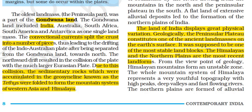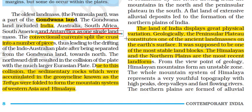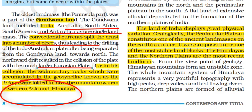Pangea broke into two pieces — one was Gondwana Land and the other was Angara Land. India was part of Gondwana Land, along with Australia, South Africa, South America and Antarctica. Due to convectional currents, this crust split into a number of pieces, leading to the drifting of the Indo-Australian plate towards the north. This plate collided with the much larger Eurasian plate, which represents today's China and Tibet region.